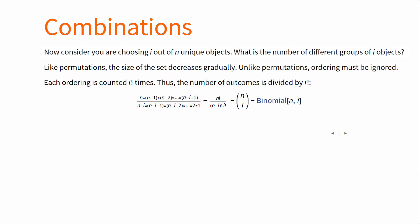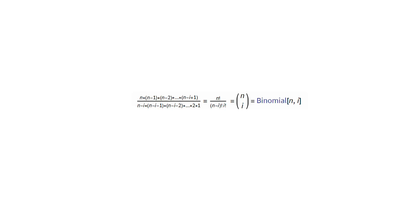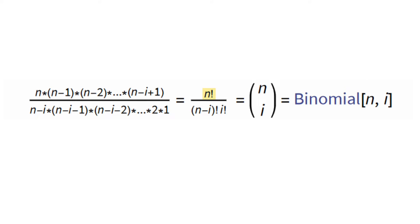We just discovered the binomial coefficient. Bi stands for two, and it's for two groups, a group of i objects and a group of n-i objects. This formula is basically the number of orderings of the entire group of size n divided by the number of orderings of the relevant group, size i, and the irrelevant group, size n-i.